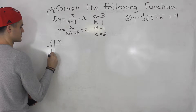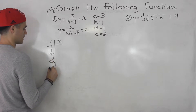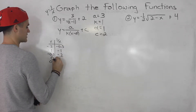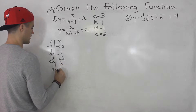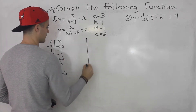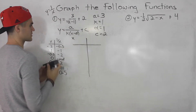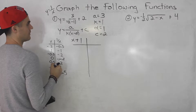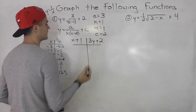I usually use these points for the table. The x values are negative 2, negative 1, negative 0.5, 0 (undefined), 0.5, 1, and 2. The corresponding y values are negative 0.5, negative 1, negative 2, undefined, 2, 1, and 0.5. We're going to transform this table by dividing x values by k (which is 1) and adding the d value of 1, then for y values applying a·y + c — multiplying by 3 and adding 2.